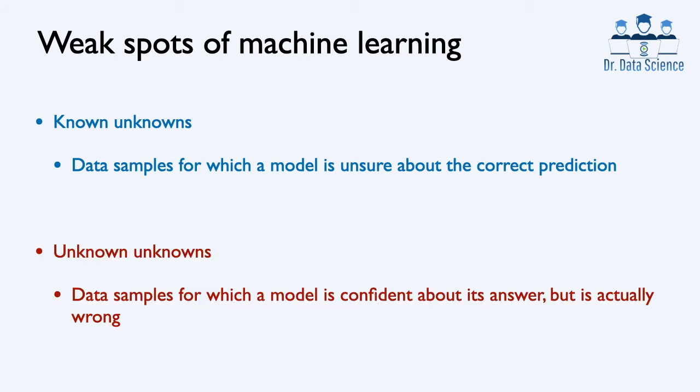Now let's talk about the second group, which is the main topic of this video: unknown unknowns. Unknown unknowns refer to data samples for which a model is confident about its answer — meaning we get probabilities very close to one or 100% — but is actually wrong. This is a real problem in developing machine learning models.